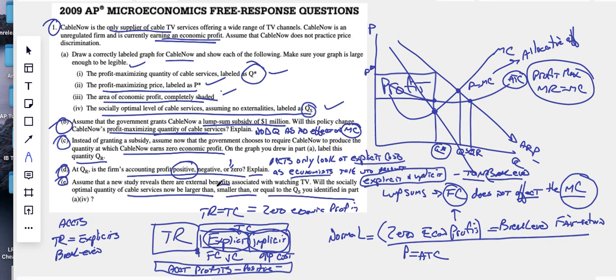Assume now that a study reveals there are external benefits to watching. Will the socially optimal quantity services now be larger or smaller or equal to QS? I think it would have to be smaller. If we suddenly decide it's a positive externality, our QS is probably not going to be large enough that you identified in part A4. Yeah, I think we would say we want more of this good.